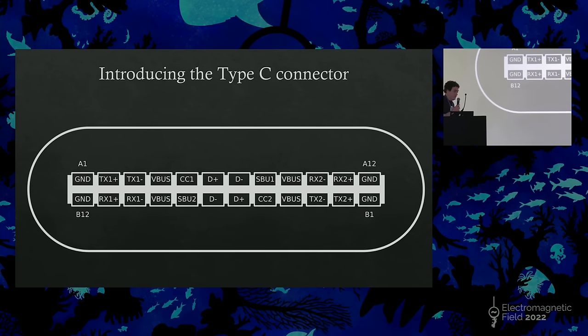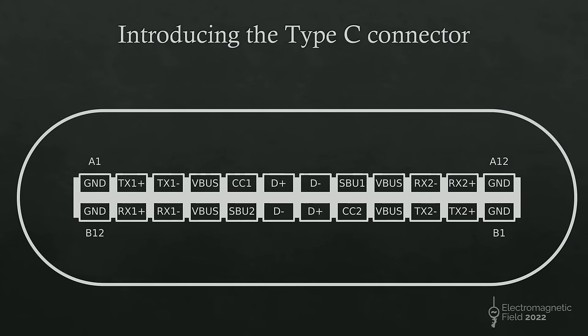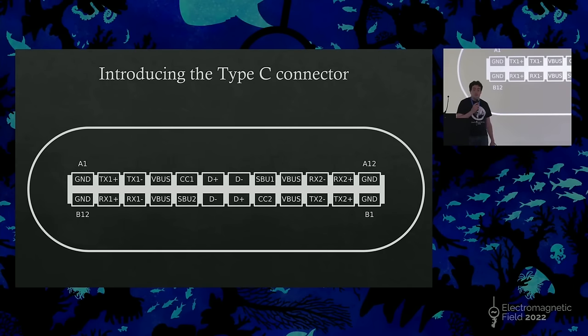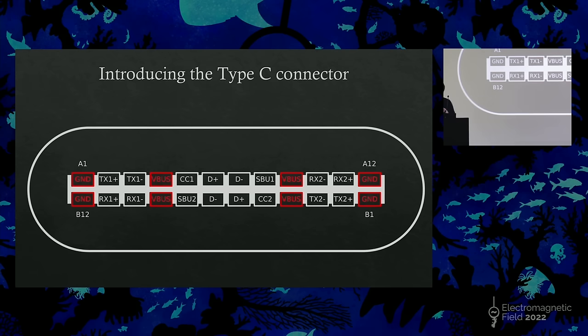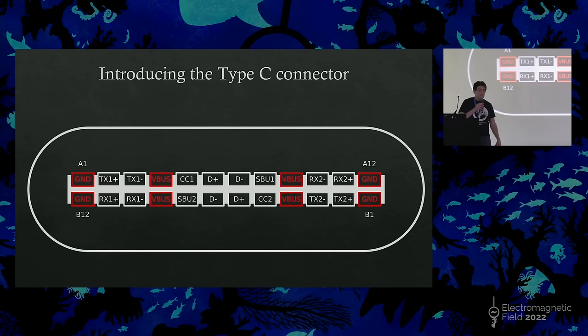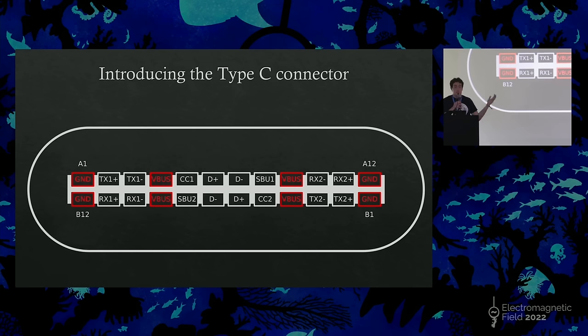So let's introduce the USB-C connector itself. It's a flippable connector so you can plug it in either way up. In addition, there is no dedicated host end and client end. So the devices need to negotiate which one is which. In order to get things going, it's got four ground pins and four power pins. So this allows it to be flipped either way and the power pins connect to the same place and the ground pins connect to the same place.